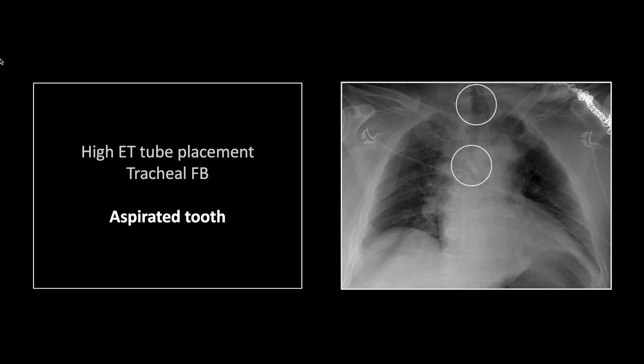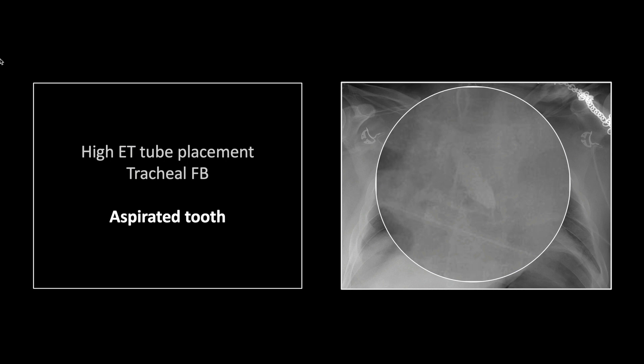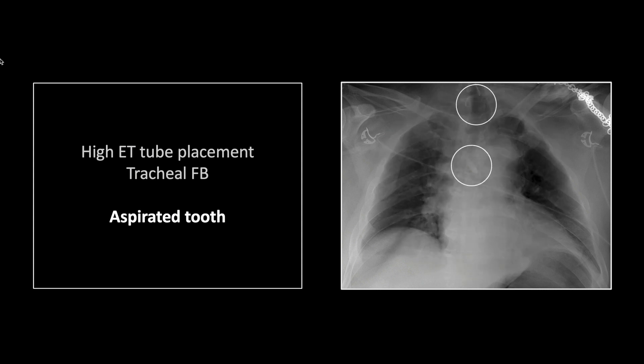If the patient's neck is in extension, the tip of the tube can be higher, and if the neck is in flexion, it can be lower. Aspiration of an incisor is a common complication of intubation due to inexpert wielding of a laryngoscope — it can knock a tooth loose, and placement of the tube often shoves it down into one or other of the bronchi. As is common with these difficult intubations, there is also significant distension of the stomach in the left upper quadrant. That is a high endotracheal tube placement with an aspirated incisor in the left main stem bronchus.